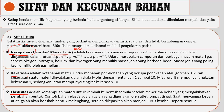Elastisitas menyatakan kemampuan benda untuk kembali ke bentuk semula. Jangan salah paham — elastisitas itu bukan kemampuan untuk meregang, tetapi kemampuan untuk kembali ke bentuk semula. Kalau ada karet bisa diregangkan tapi tidak bisa kembali ke bentuk semula, itu tidak elastis. Tapi kalau ada benda ditariknya susah tapi cepat kembali ke bentuk semula, itu namanya elastis. Contohnya adalah galah untuk lompat tinggi — meskipun kelihatannya susah diregangkan, ketika dibengkokkan dia cepat kembali ke bentuk semula.